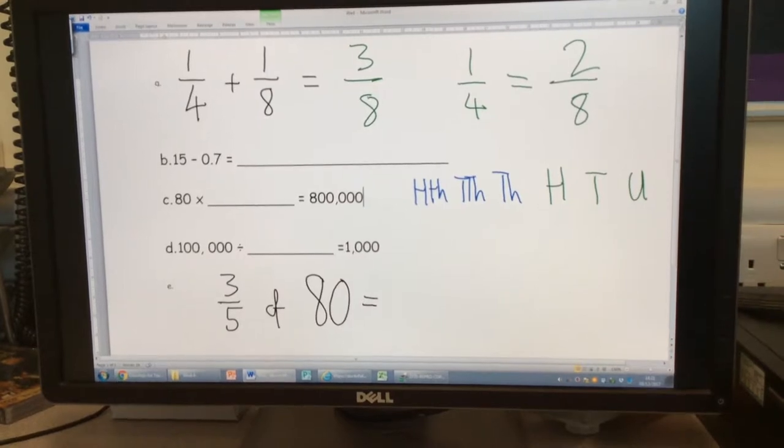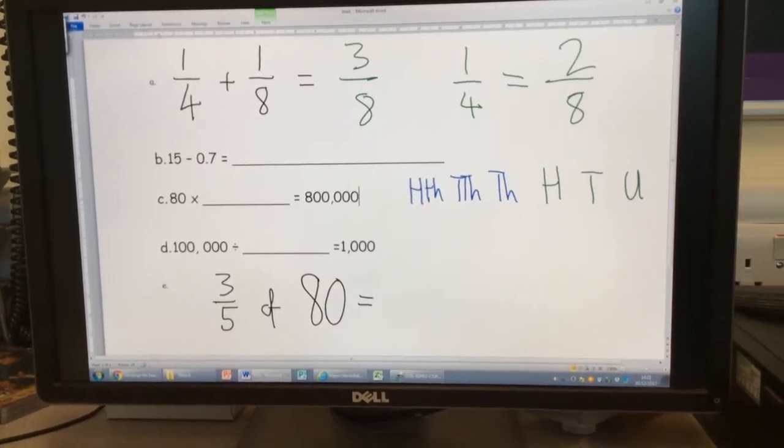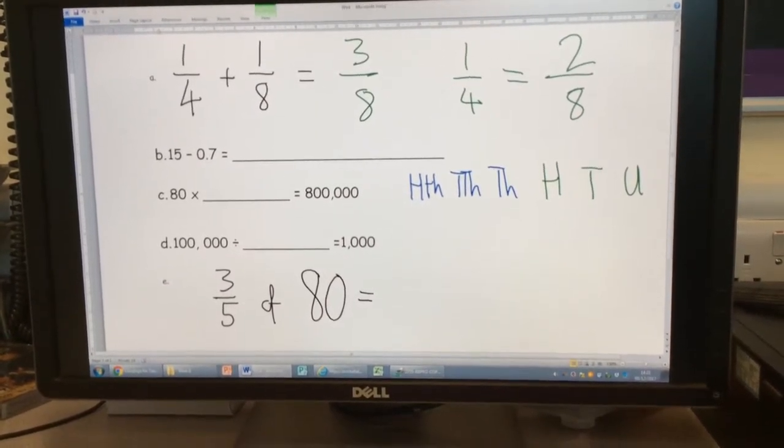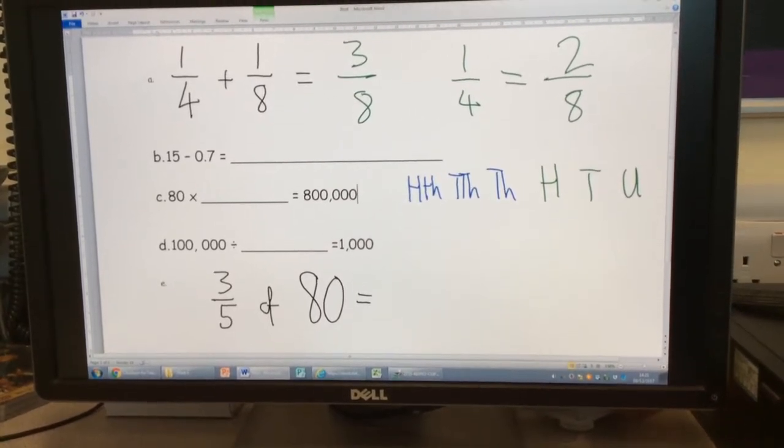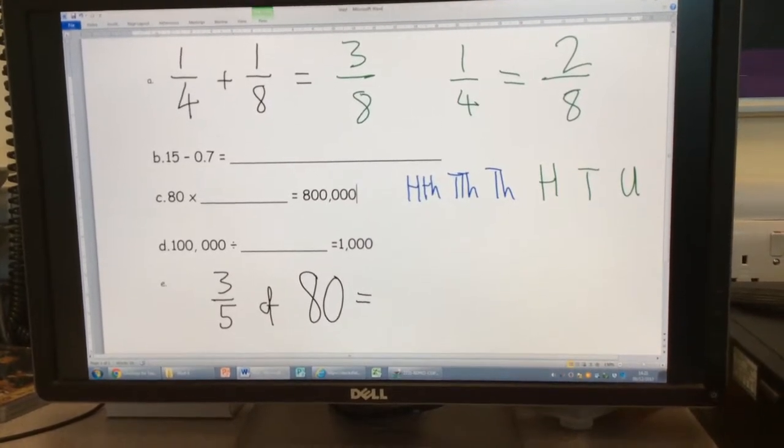And now I've got two eighths. It should be dead easy to add together, shouldn't it? Because I've got two eighths, which is the same as a quarter, added to one eighth, which will be what, Sammy? Three eighths. Excellent. Remember, your denominator doesn't change when you're adding from the same denominator. Hands up if you've got three eighths. Fantastic. Well done.